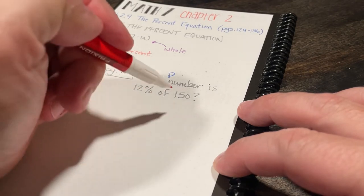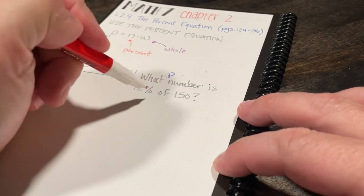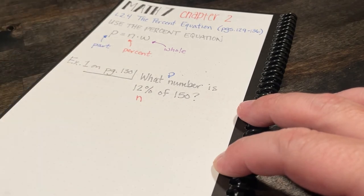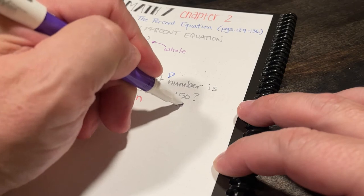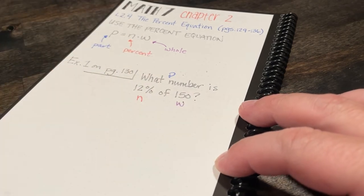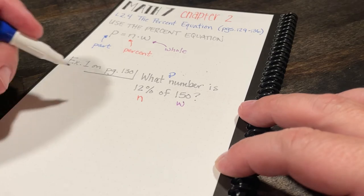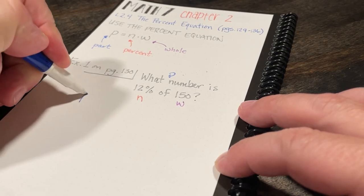So in example 1, we have what number is 12% of 150. So let's see if we can figure out what goes where. The what number is going to be the part, 12% is going to be our percent, and 150 is going to be our whole.